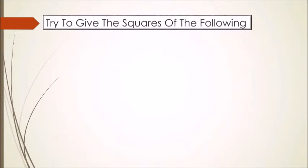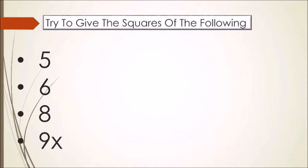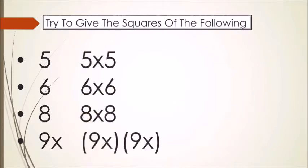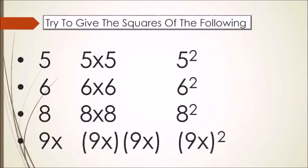Now, try to give the squares of the following: What is the square of 5, 6, 8, and 9x? Simply, we multiply 5 by itself, 6 by itself, 8 by itself, and 9x by itself. We will have these expressions, and finally, we have these products.